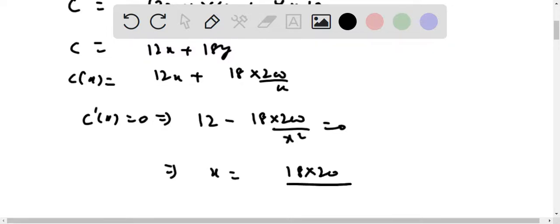So 10 under root 3 feet. And Y should be equal to, from 200 by X.